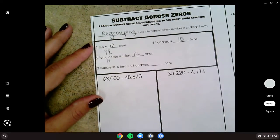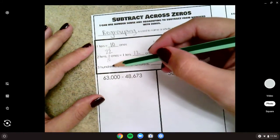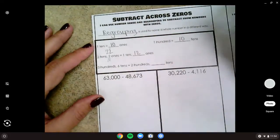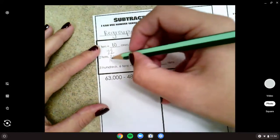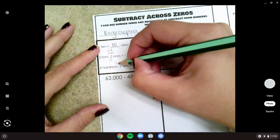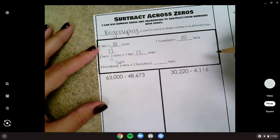What about three hundreds and six tens? What number is that the same as? 300, six tens, and no ones is 360.